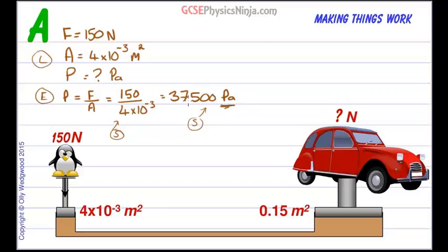So that pressure, 37,500 pascals, is being transmitted through this fluid, through this oil, and is now going to be applying itself on this larger piston, which is supporting this 2CV car. And we've got to work out what the force is that this pressure creates.